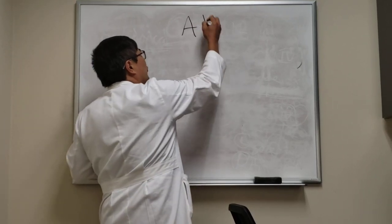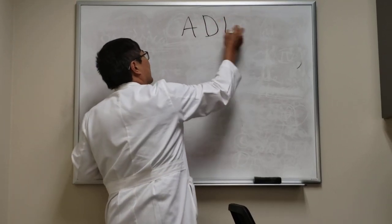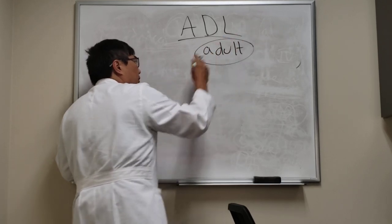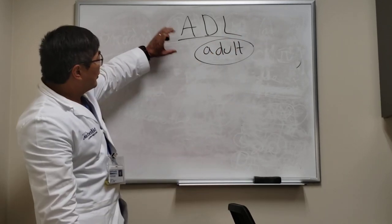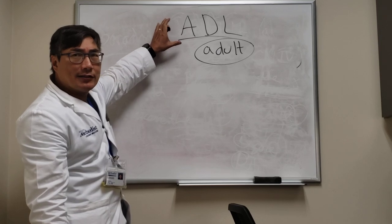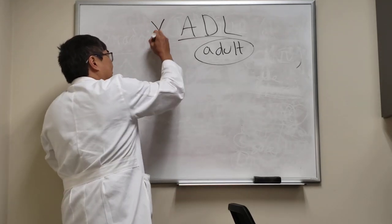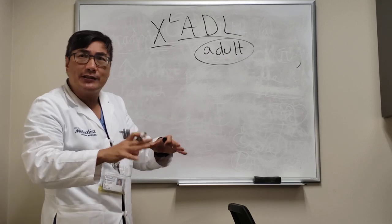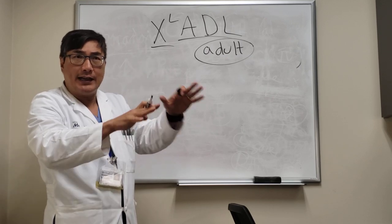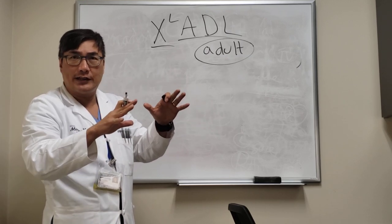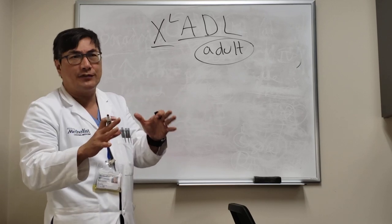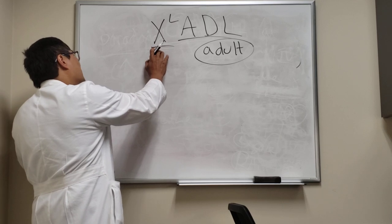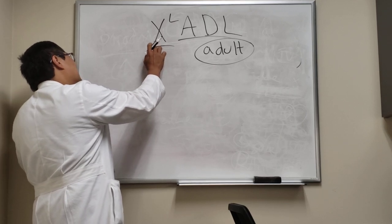Someone wanted to know about adrenoleukodystrophy in adults. As an adult neuro-ophthalmologist, the way this comes to me is through its x-linked inheritance. Affected males are normally diagnosed as teenagers, children, or at least in early adulthood — even in very mild forms — before coming to see me.